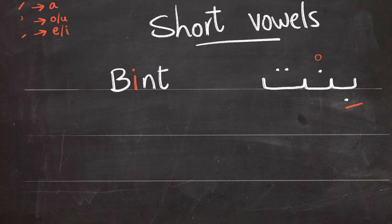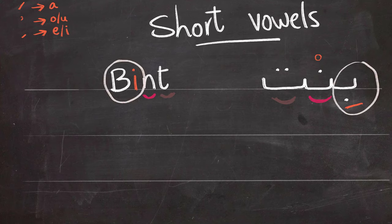So in the example we have here, bint which means girl, we only have one short vowel and that is kasra under the ba. And we notice that the noon has sukoon. So there is nothing after. There is no vowel after it. And the ta has sukoon also with nothing after it either. Again you can use sukoon or completely nothing above or under the letter which gives the same effect.